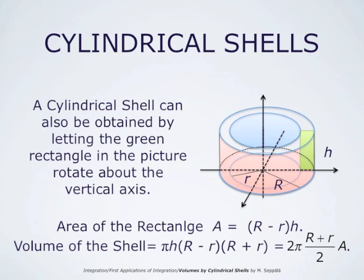Because the quantity h times (R minus r) is A, what remains is pi times (R plus r), and it is convenient to write that as 2 pi times ((R plus r) divided by 2) times A.